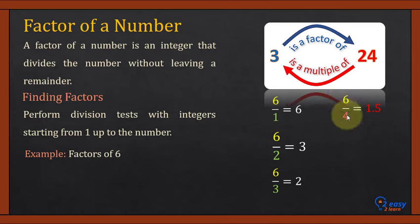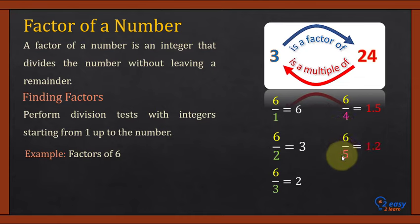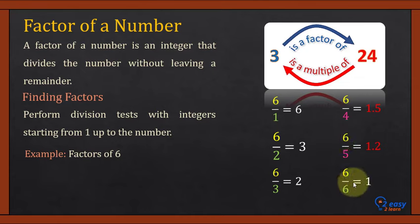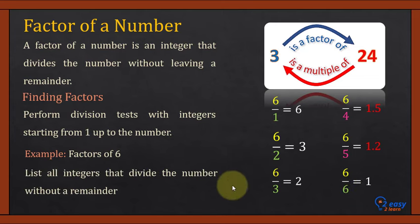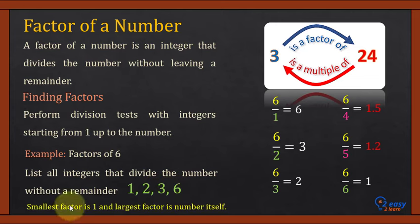6 divided by 4 is 1.5, which is a decimal and not an integer, so 4 is not a factor of 6. 6 divided by 5 gives 1.2, which is not an integer, so 5 is not a factor of 6. 6 divided by 6 equals 1, so 6 is also a factor of itself. Therefore, the factors of 6 are 1, 2, 3, and 6. The smallest factor is 1 and the largest factor is the number itself, 6.